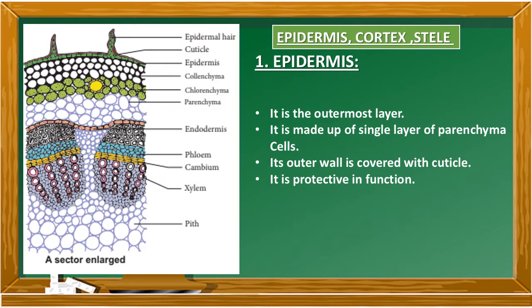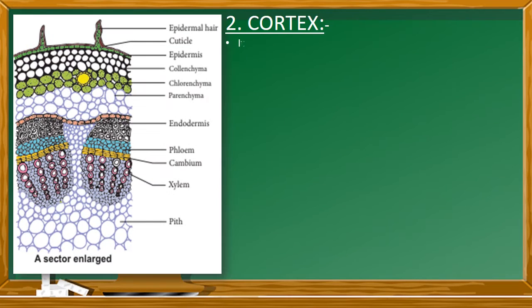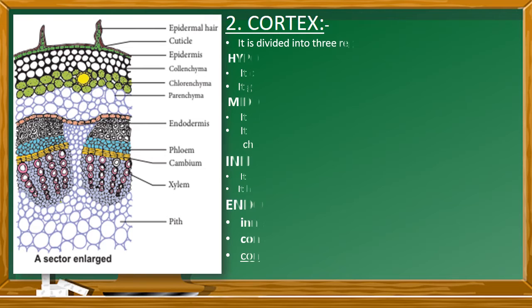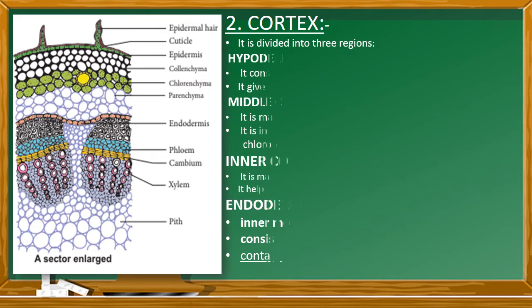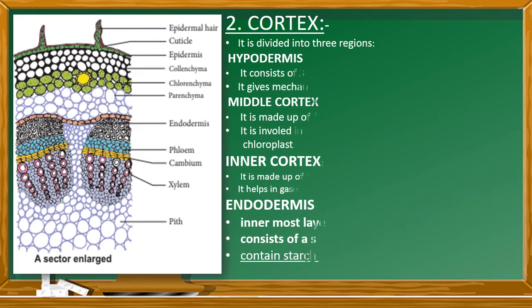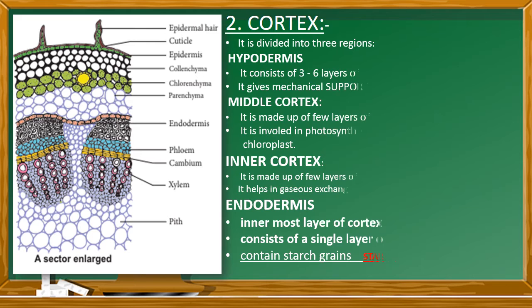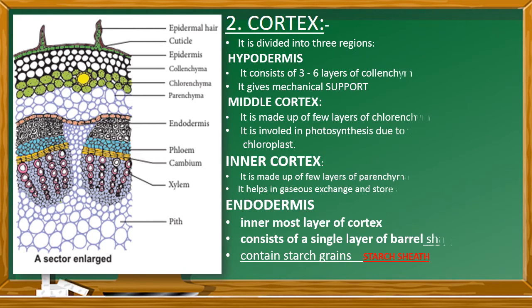Next is the cortical region. The cortical region is divided into three regions: hypodermis, middle cortex, and inner cortex.